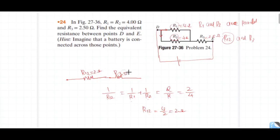R3 is 2.56 ohm. Further simplify to find the equivalent resistance between points D and E. For series combination, simply add them: 4.5 ohm. This is the equivalent resistance for this combination.